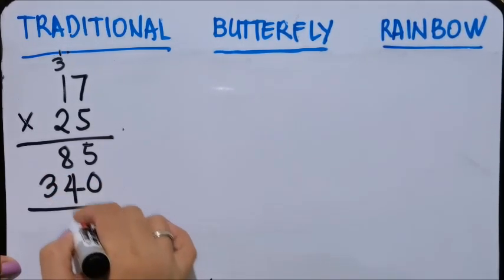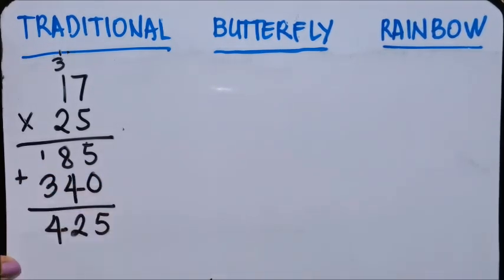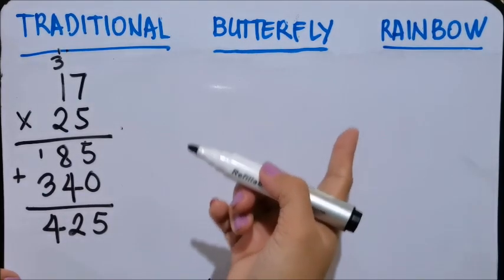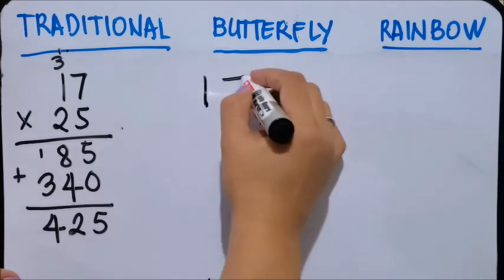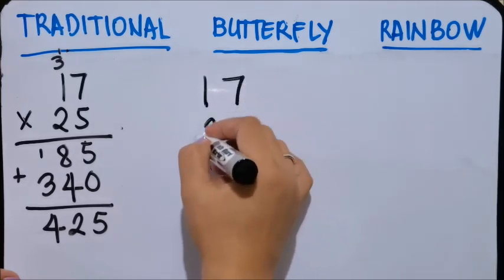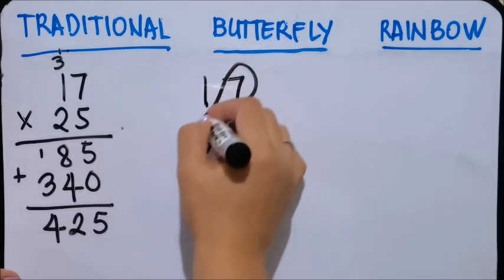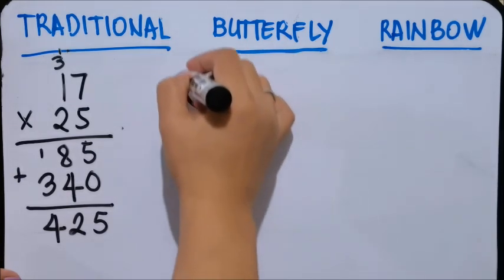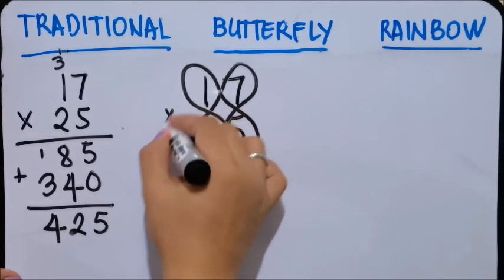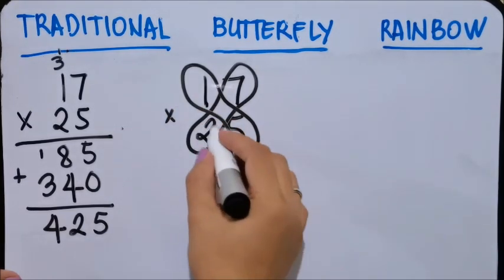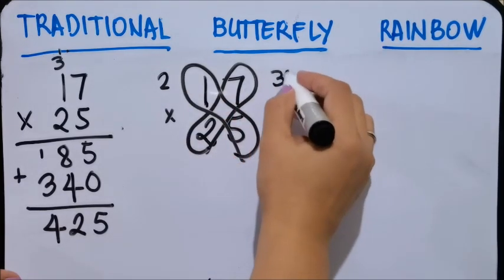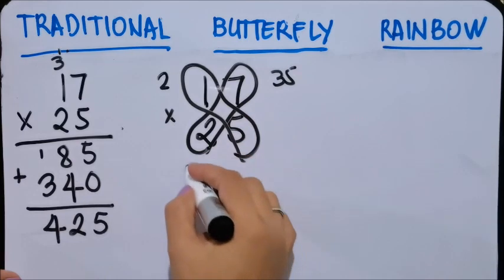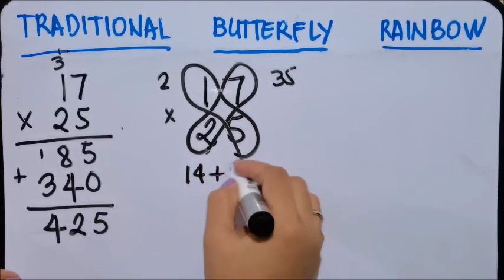Then 0, 2 times 7 is 14, 2 times 1 is 2 plus 1 is 3. So 5, 2, 3, 1, 4, 425. Butterfly style or butterfly technique. Again, let's draw a butterfly.